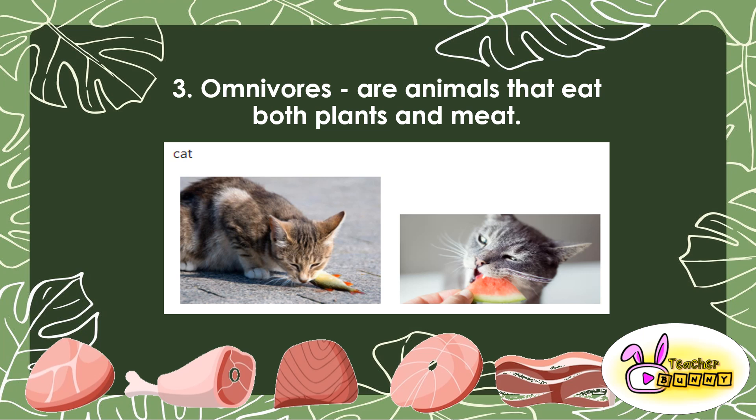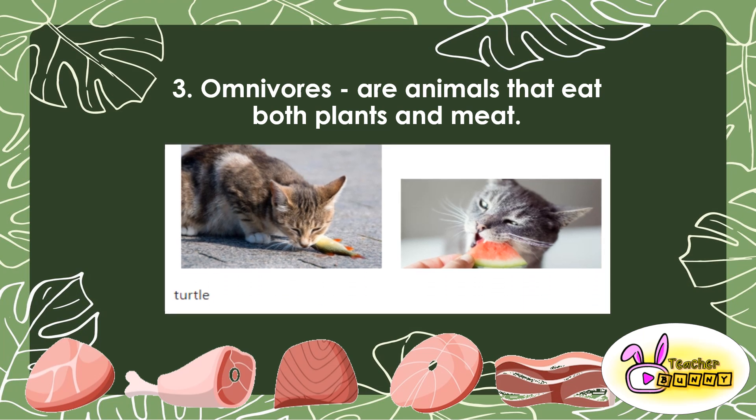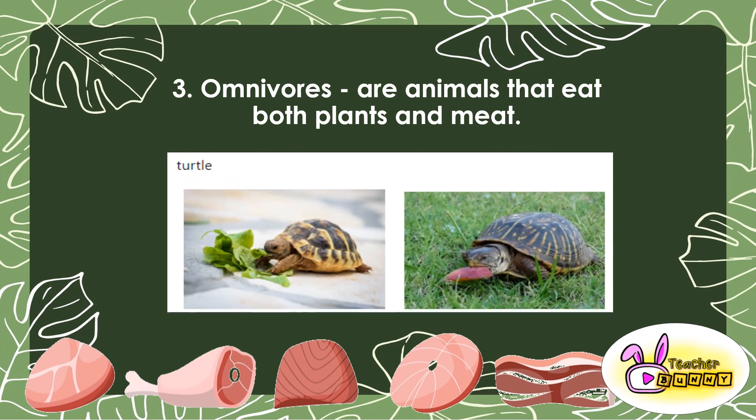On the picture, this cat is eating a fish and a watermelon — so cute! Cats are also omnivores; they can eat both plants and meat. Turtles are also omnivores — they can eat vegetables, fruits, and also meat. That's why these animals are called omnivores: they eat both plants and meat.